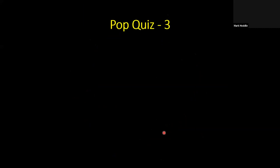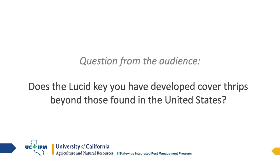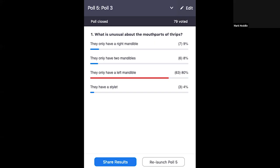Pop quiz number three: What is unusual about the mouthparts of thrips? They only have a right mandible; they only have two mandibles; they only have a left mandible; or they have a stylet? The correct answer is they only have a left mandible. A related question: what are lacinia? Lacinia are modified parts of the maxillae that in thrips form a stylet — a round tube like a straw — and the buccal pump draws fluids up through it.